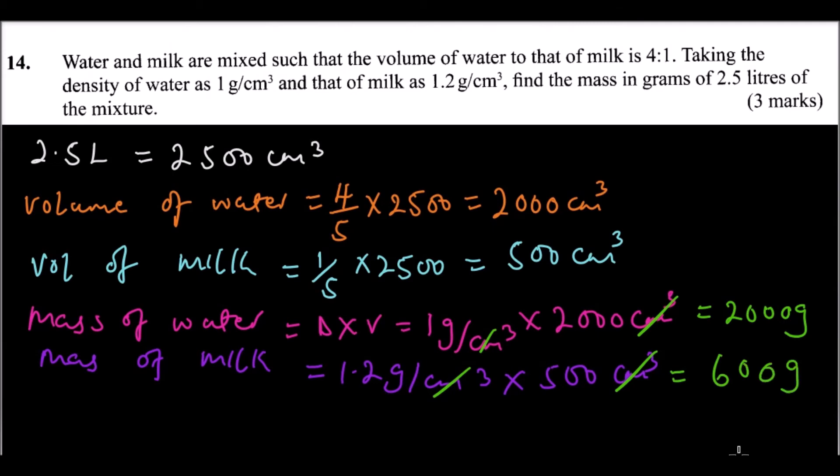Now, to get the total mass, that is, you are required to find the total mass. Total mass is equals to 2,000 grams plus 600 grams, which will give you 2,600 grams. So, that is how you do that.